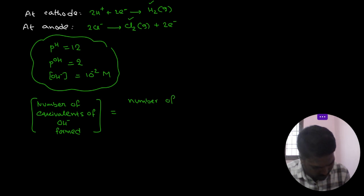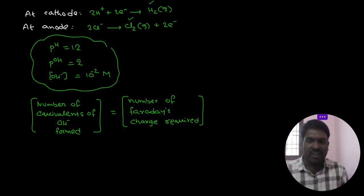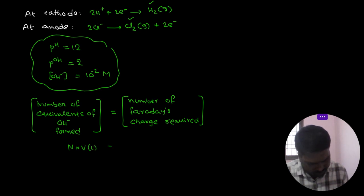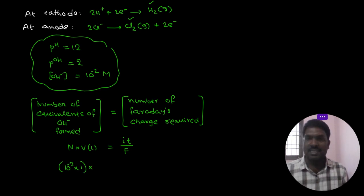Now we use the formula: number of equivalents of hydroxide ion equals number of Faradays of charge required, which equals IT/F. The number of equivalents formula is normality × volume in liters. Normality equals molarity × n-factor: molarity is 10⁻² M, n-factor for hydroxide ion is 1.